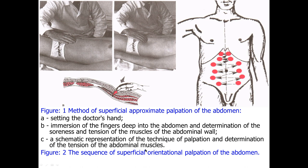The sequence of superficial palpation should start from the left inguinal region, go to the right inguinal region, then to the lateral part, then to the right and left hypogastric region, and then after reaching the epigastric region, go down to the umbilical region and hypogastric region. During superficial palpation you should detect soreness and tension of muscles, whether there are any bulgings, and detect divergence of the rectus abdominis muscle.